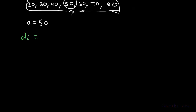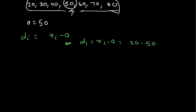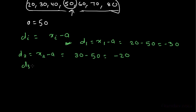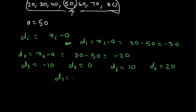Now, di is equal to xi minus a. This is the general formula for di. By the help of this formula, we can calculate d1. d1 is equal to x1 minus a, equal to 20 minus 50, equal to minus 30. Similarly, d2 is x2 minus a, equal to 30 minus 50, equal to minus 20. Similarly, we can calculate d3 as minus 10, d4 as 0, d5 as 10, d6 as 20, and d7.